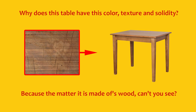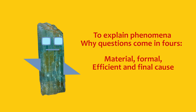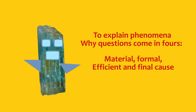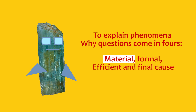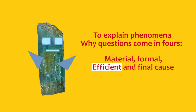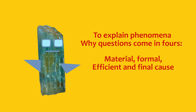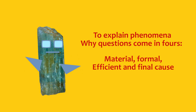Why does this table have this colour, texture and solidity? Because the matter it is made of — wood, can't you see? To explain phenomena, why questions come in force: Material, formal, efficient and final cause.